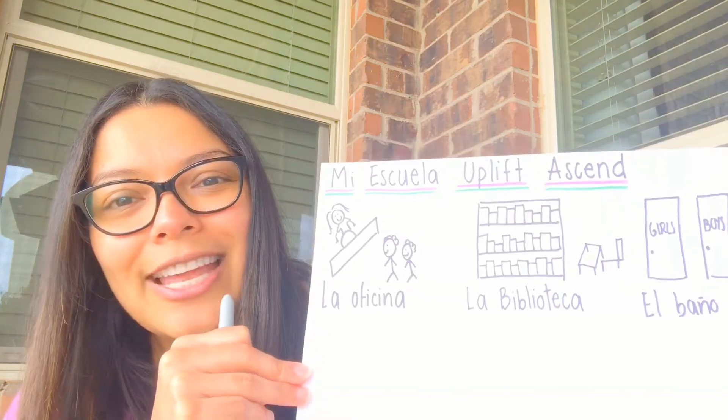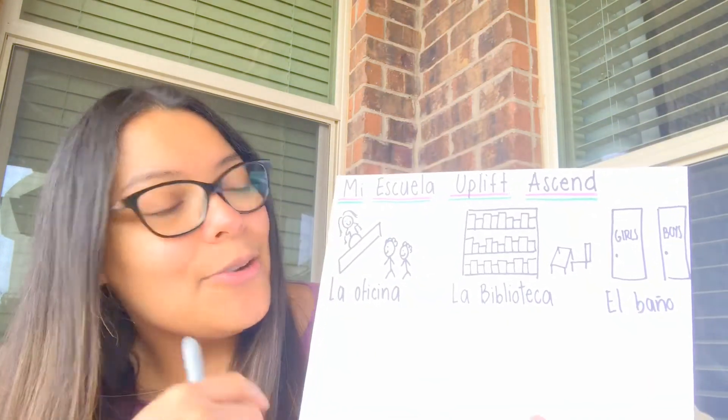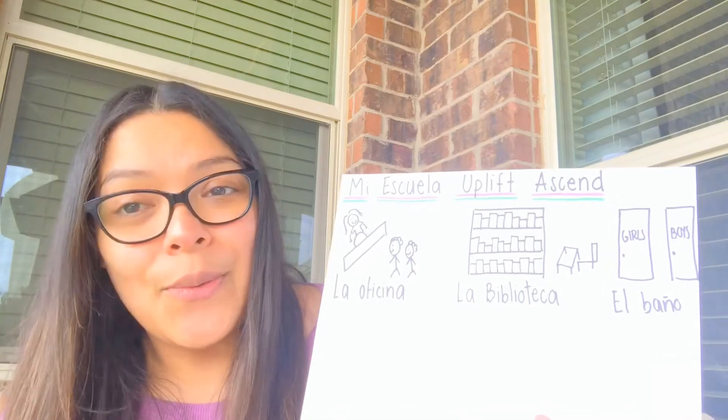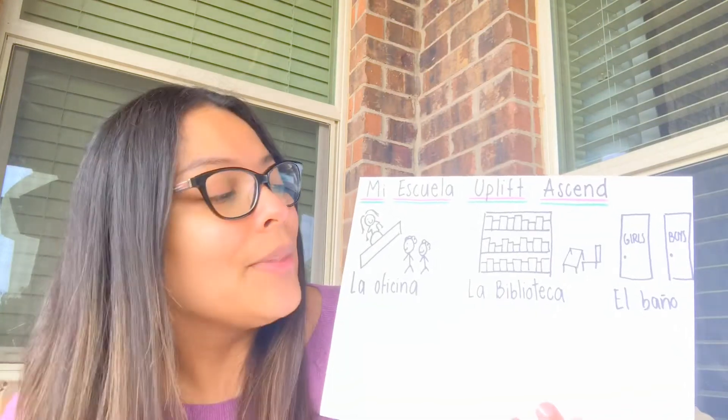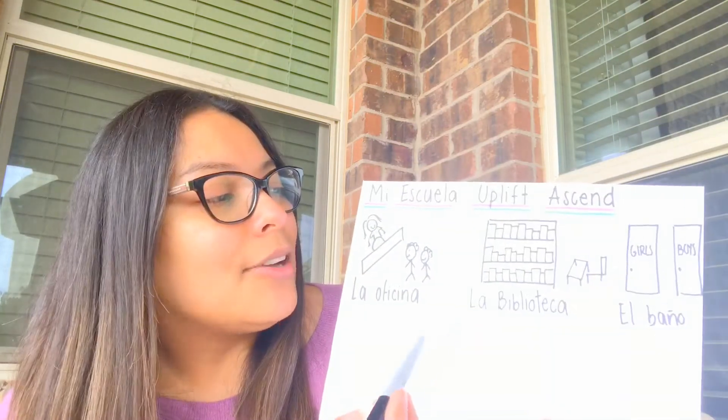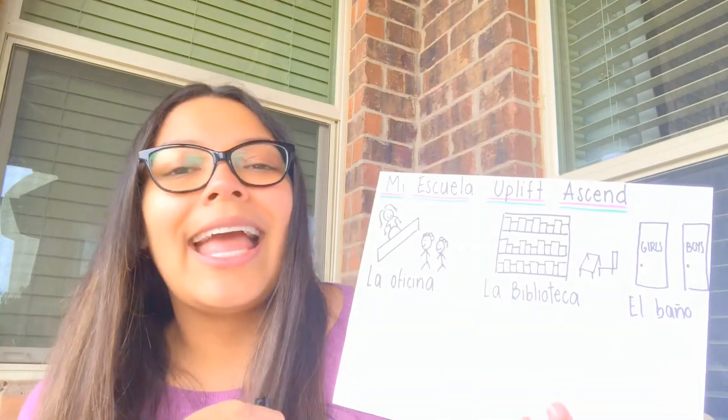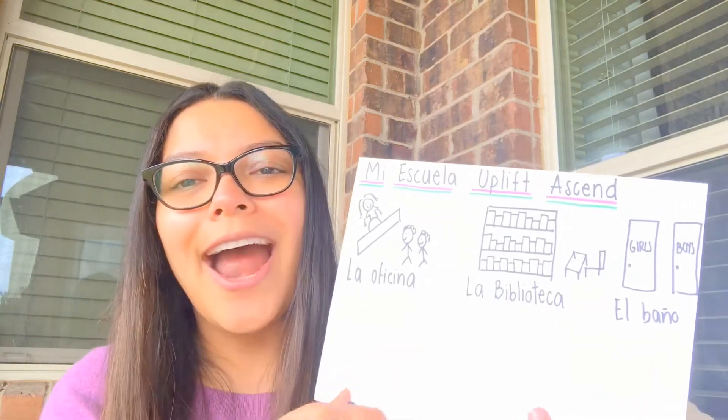En la clase anterior estuvimos hablando acerca de la escuela. In our previous lesson, we were talking about our school. Un lugar que de verdad que extrañamos muchísimo estos días. A place that we really miss a lot these days. Les pedí en el video anterior de que dibujaran las tres primeros lugares dentro de una escuela. In our first video, we learned three different places in our school, and we drew each of them.